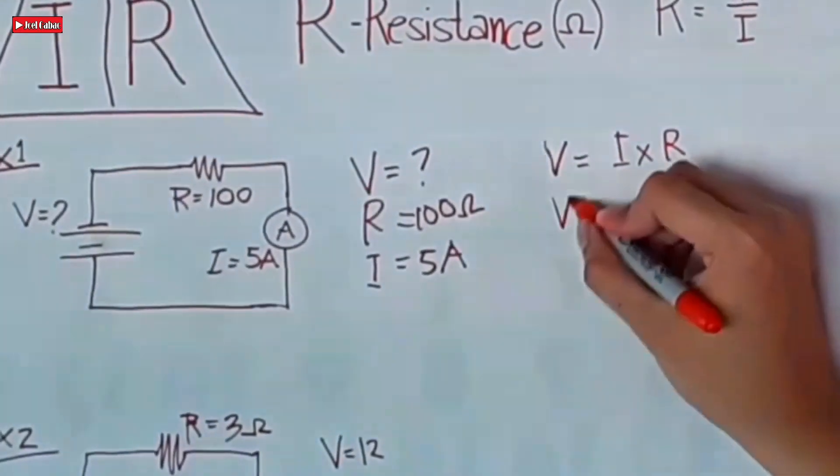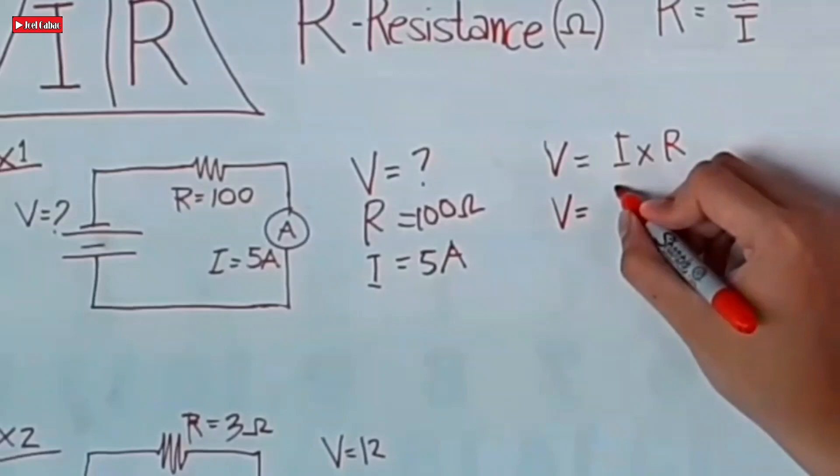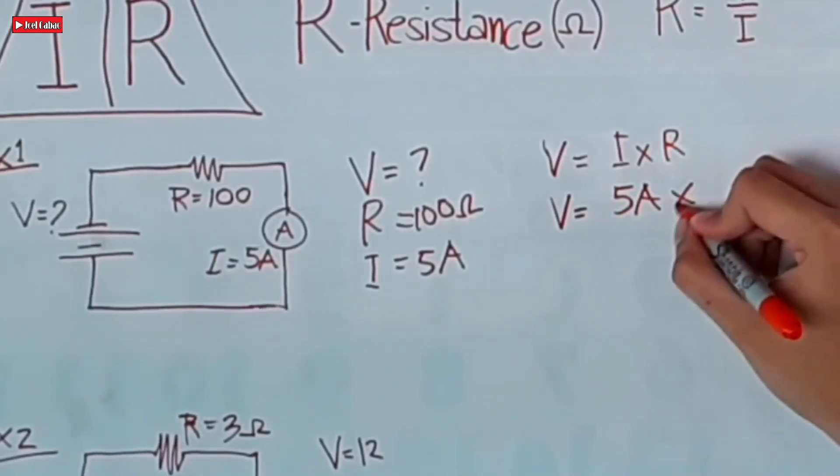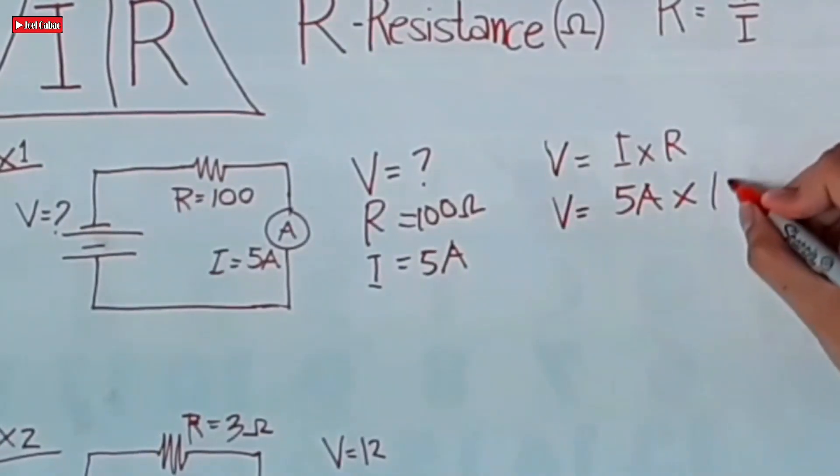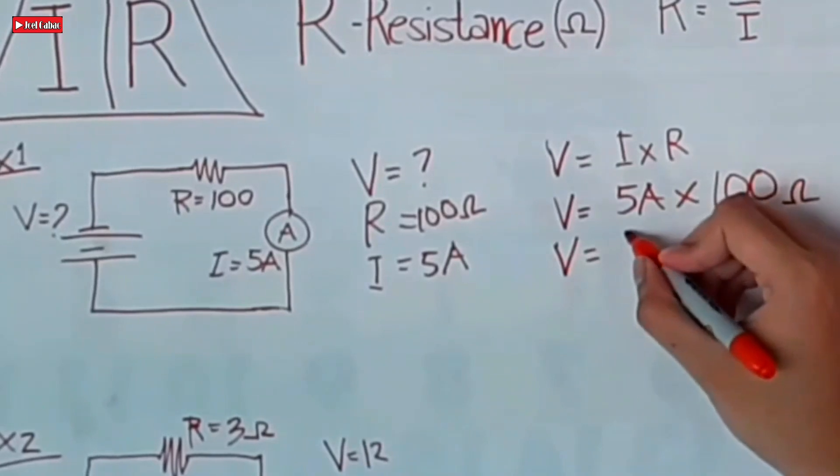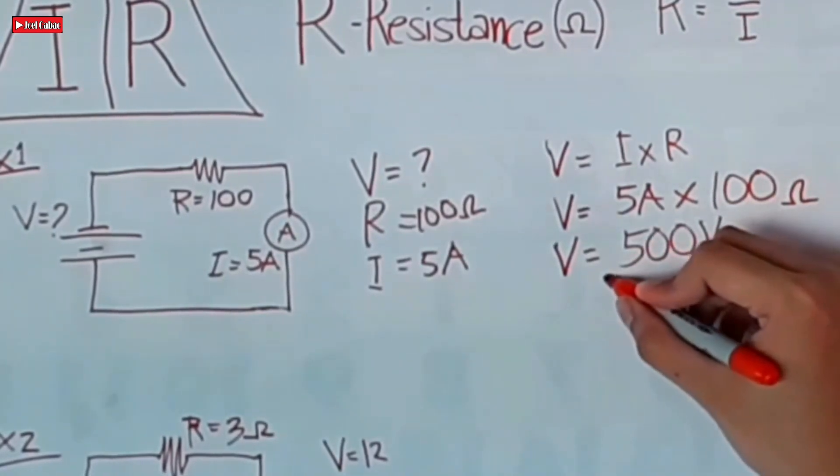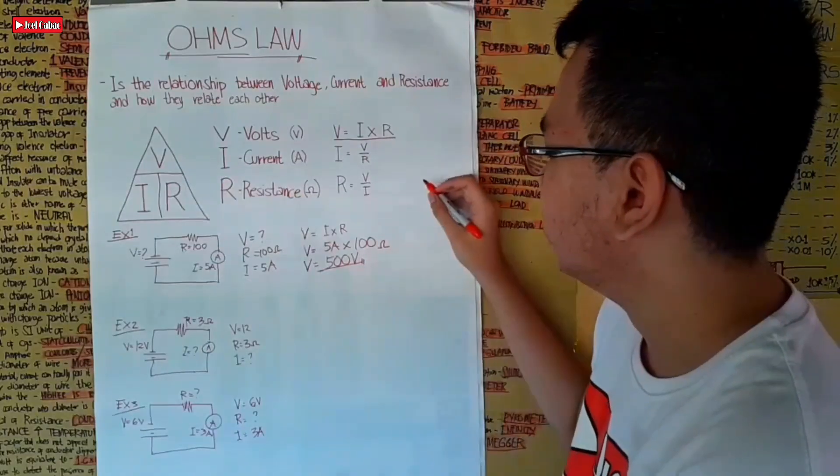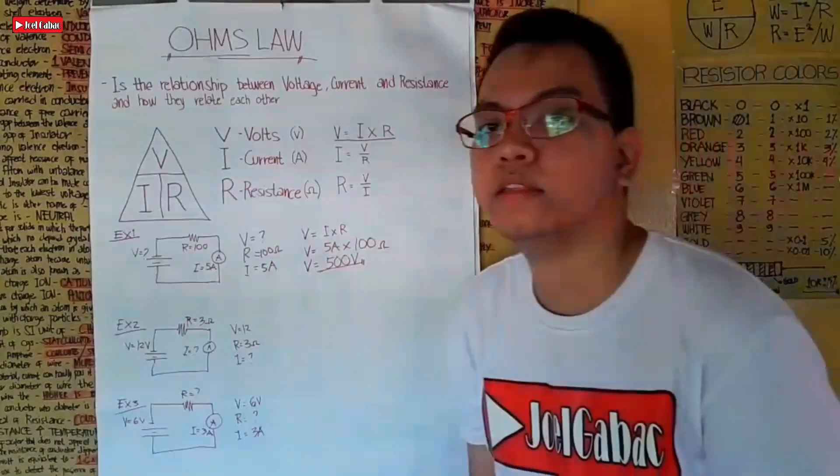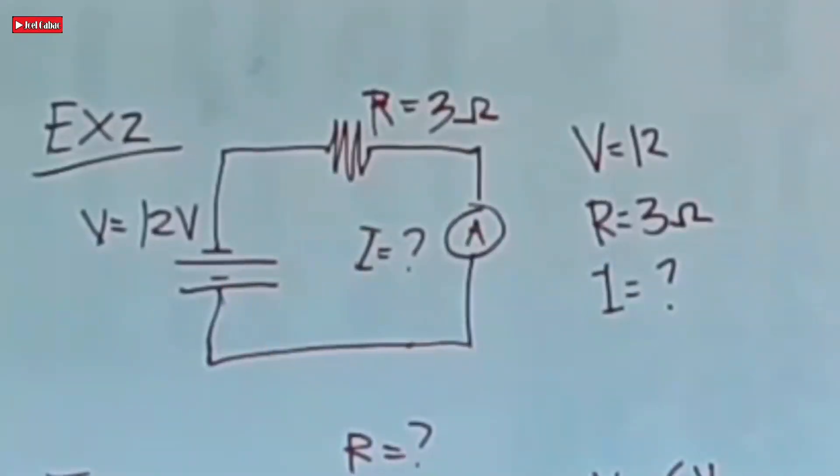So V, which is unknown, equals I which is 5 amperes times R which is 100, equivalent to 500 volts. Therefore, our V is 500 volts.